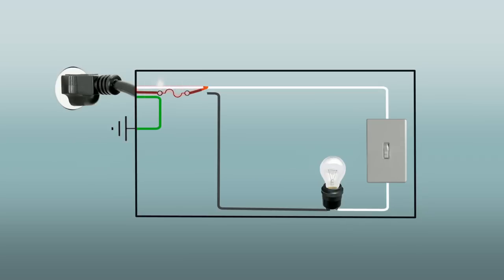To correct a short, the damaged conductors or component must be located and repaired. Then the circuit breaker can be reset or the fuse replaced. That was easy.